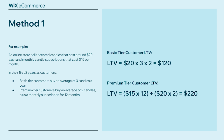For the premium tier, we calculate $15 subscriptions × 12 months plus $20 × 2 candles, giving us a total of $220. So we have two customer segments with two different customer lifetime values.